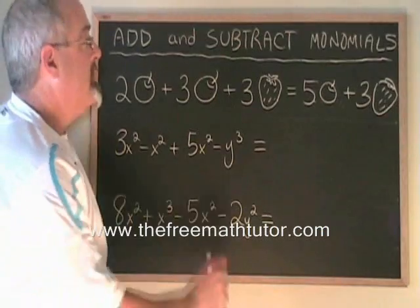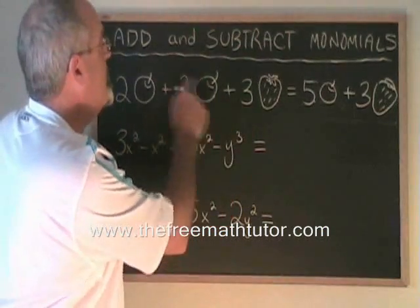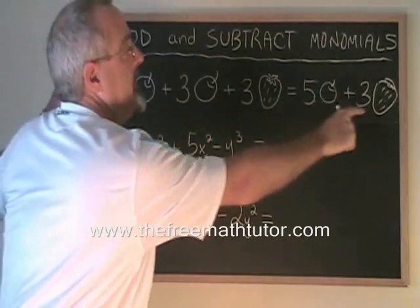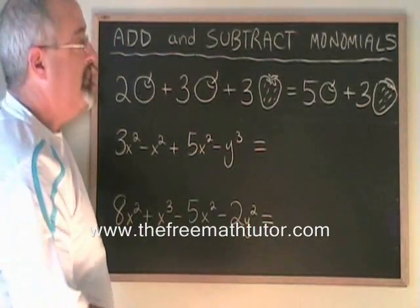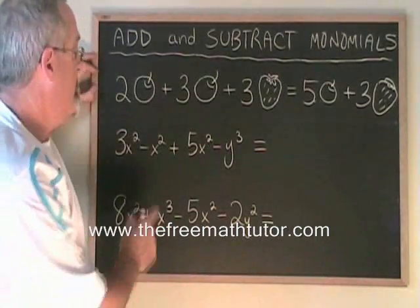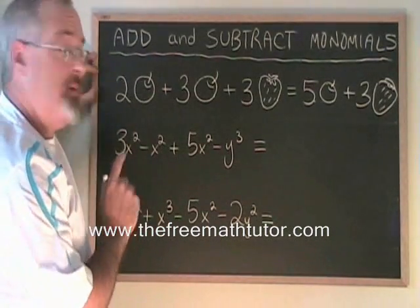Now it's clear - the similar terms, apples, have been combined, and the dissimilar term, the strawberries, has been kept separate. This is what we do in polynomials, but usually instead of pictures of apples and strawberries, we have variables and exponents.